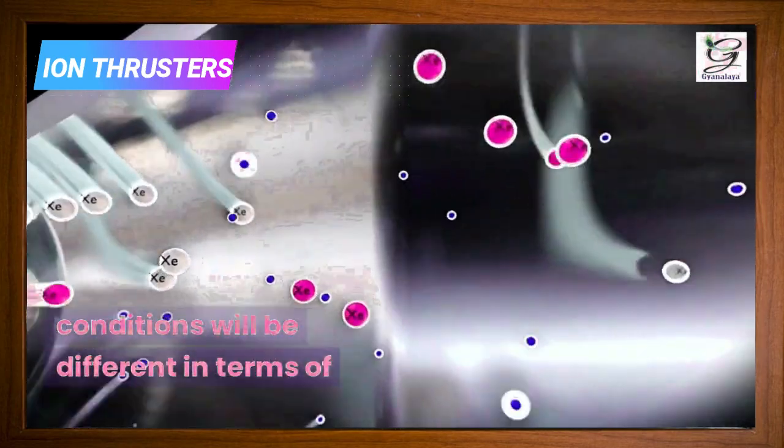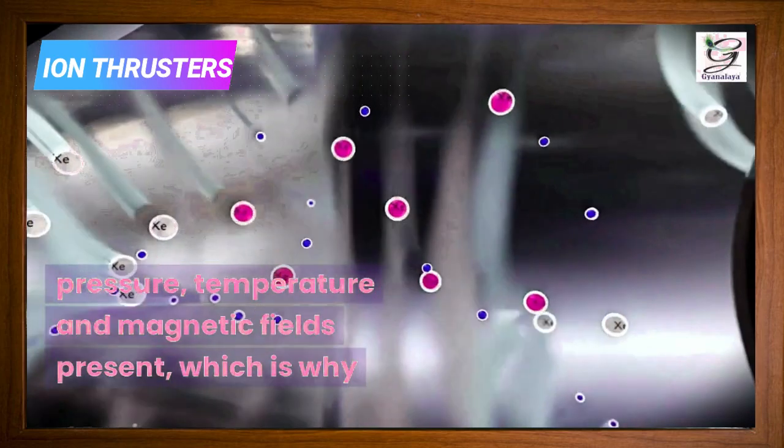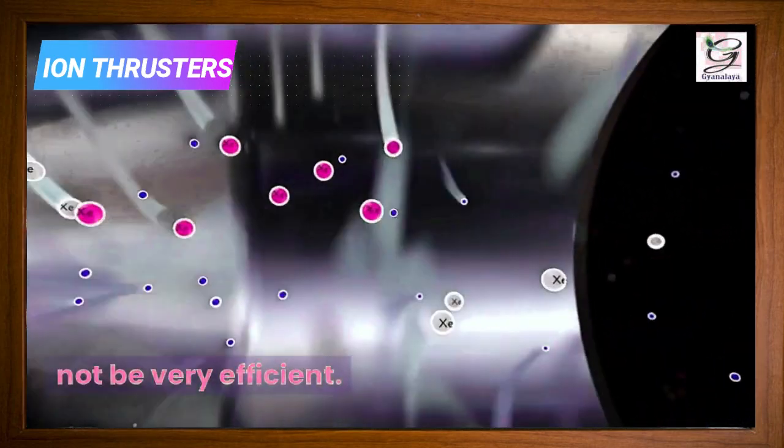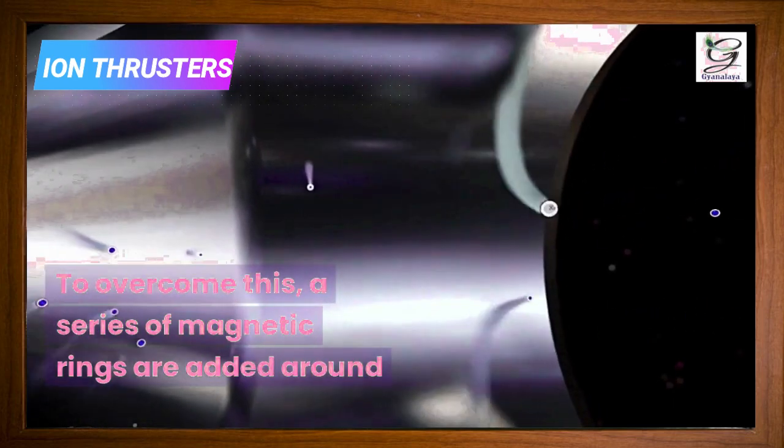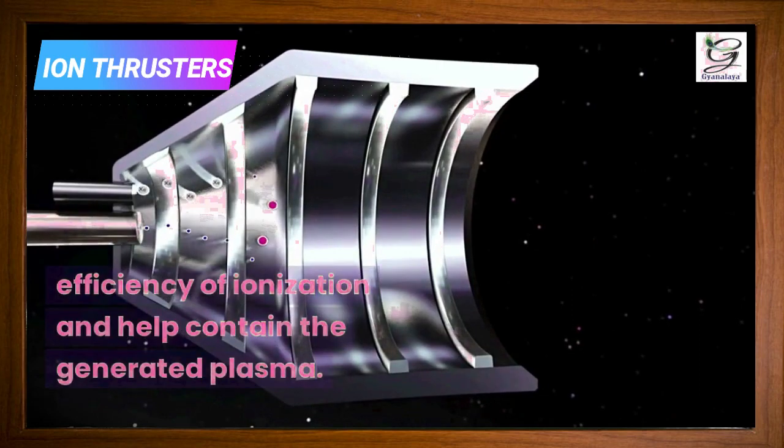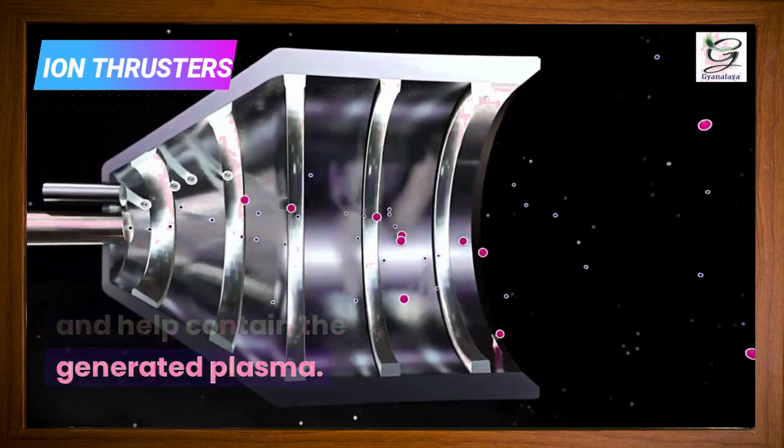However, this time the conditions will be different in terms of pressure, temperature, and magnetic fields present, which is why the ionization of the xenon will not be very efficient. To overcome this, a series of magnetic rings are added around the main container, which increase the efficiency of ionization and help contain the generated plasma.